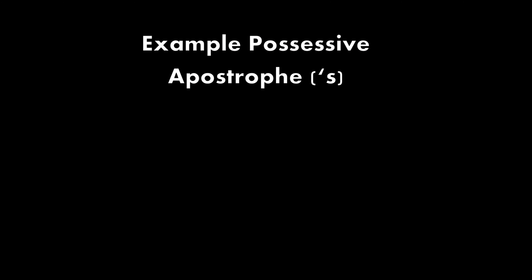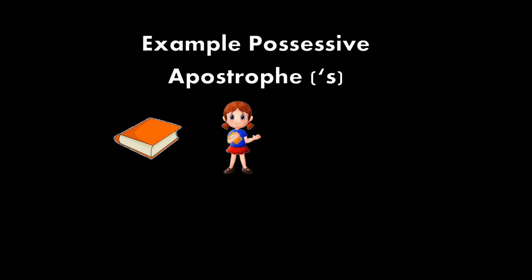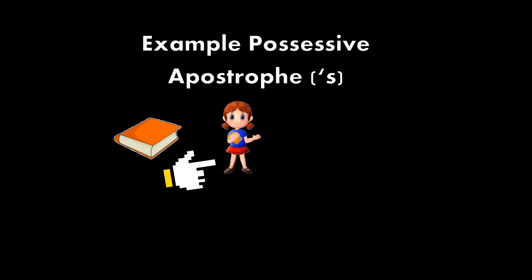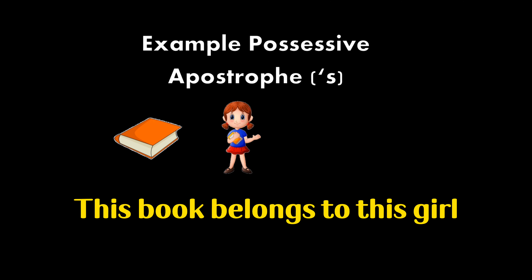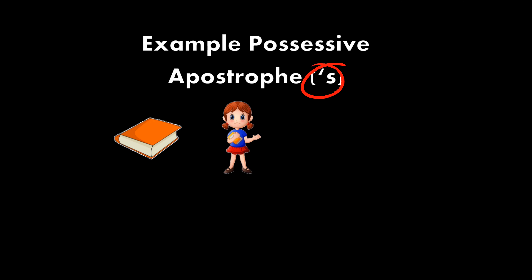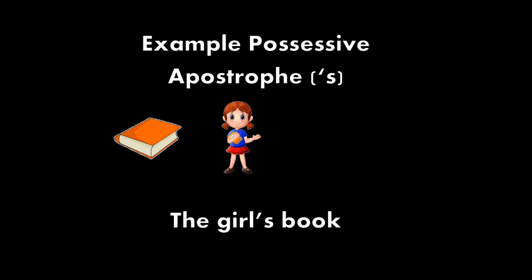So now we're going to try an example of possessive apostrophe. First, we're going to try apostrophe S. If you look at this picture, there is a book, and this book belongs to the girl. So usually we're going to say this book belongs to this girl. But today, we're going to learn apostrophe S. So what are we going to say? We're going to say the girl's book.